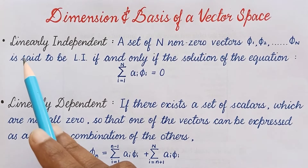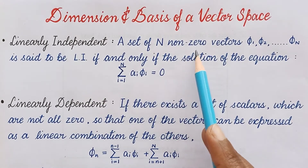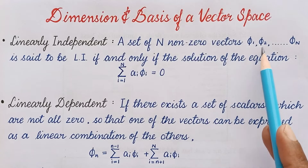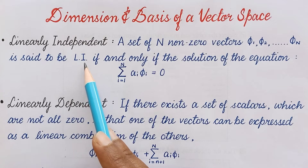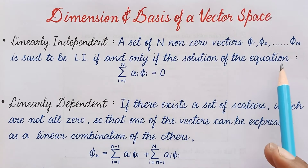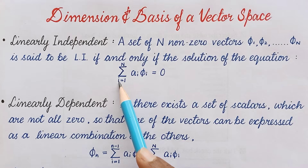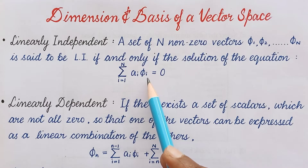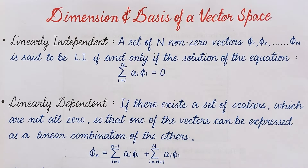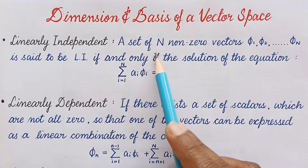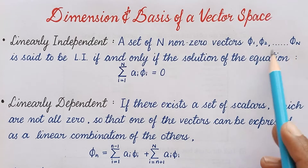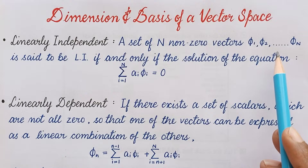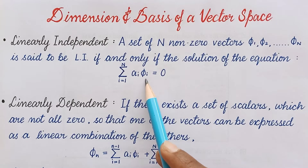What is linearly independent? A set of n nonzero vectors φ1, φ2 till φn is said to be linearly independent if and only if the solution of the equation — summation i equals 1 to n of aᵢφᵢ equals 0. Here all the vectors φᵢ are nonzero, meaning they have some value.